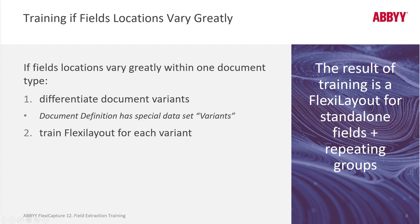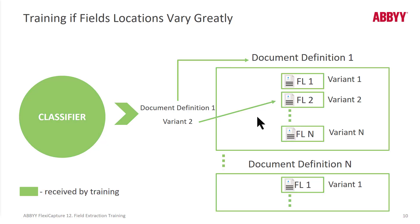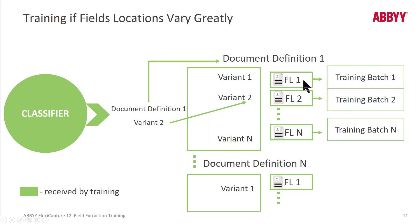Let's take a look at what this looks like. We can have a document definition with one section, and that section can have multiple variants. For bank statements, for example, you might have a bank statement document definition with one single section, but variant one could be bank one, variant two could be bank two, and so on. FlexiCapture learns how to classify each variant differently, so it knows not just that this is a bank statement, but which type. When a verifier verifies that data, a FlexiLayout is actually built for you, resulting in training batches for each variant.